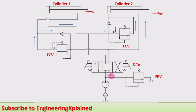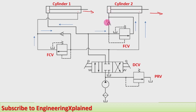When the direction control valve is actuated to the right envelope, the flow is taking place through this line and that connects here. The flow in this direction will not go as there is a check valve, and this is the sequencing valve which will not allow flow at lower pressure. Then it goes to the rod end side of cylinder two through this line. Then the fluid from the piston end side of cylinder two will be going through the check valve, as it opens in this direction, then going back to the tank.